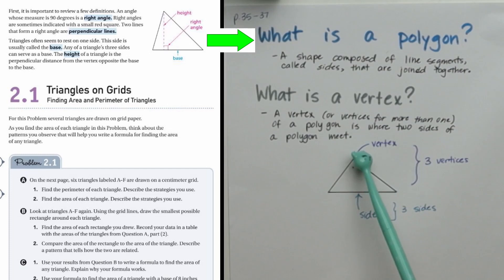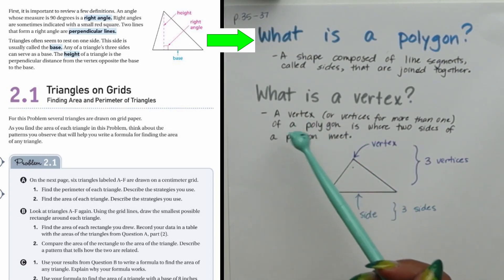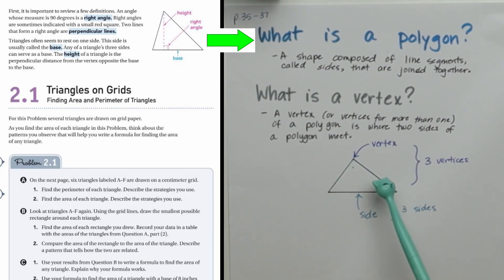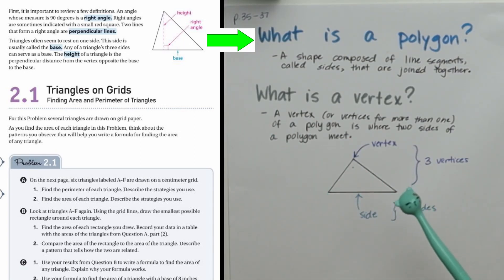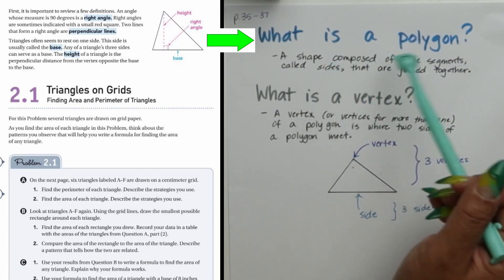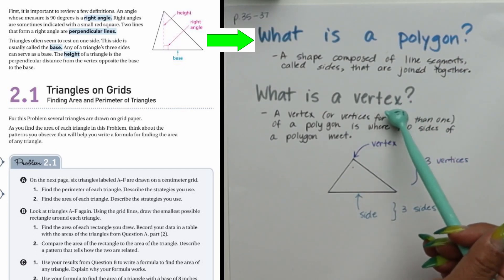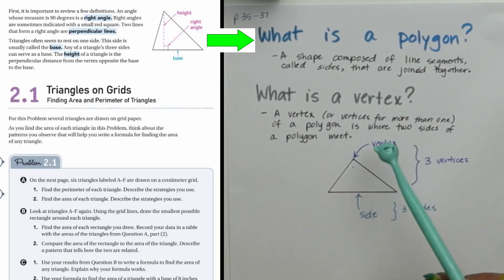Sides are joined together by a vertex — or vertices if there's more than one. In a triangle there are three vertices, and in polygons a vertex is where two sides meet. So a triangle has three sides and three vertices. In a rectangle there are four sides and four vertices.